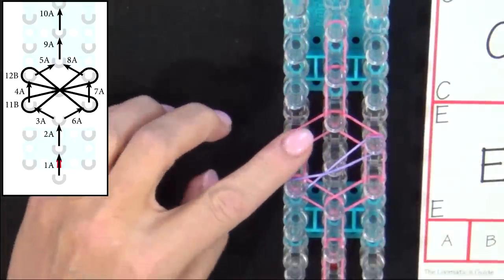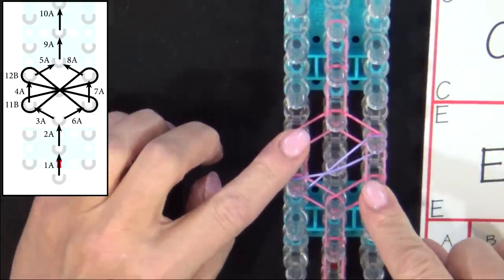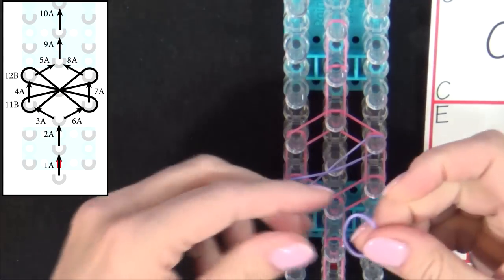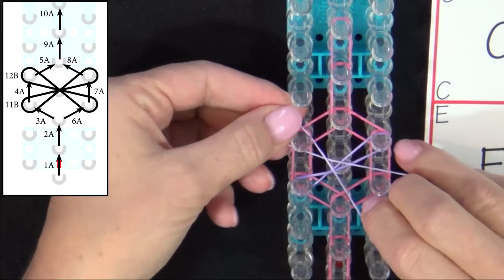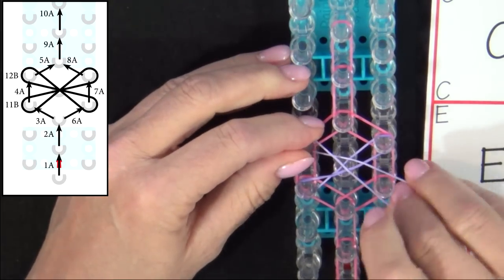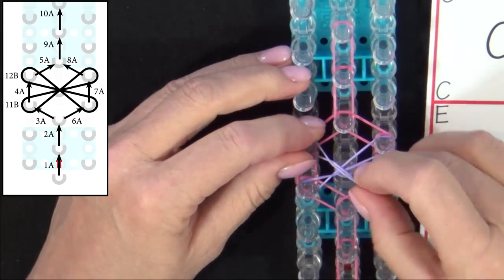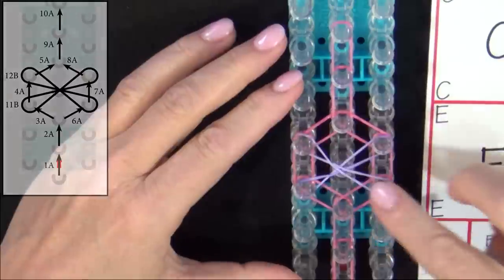Then we'll place band 12B. It will extend between these two pins. You get your B colored band, twist it into a figure 8, and place it so that the two bands actually make a cross in the middle of the hexagon.